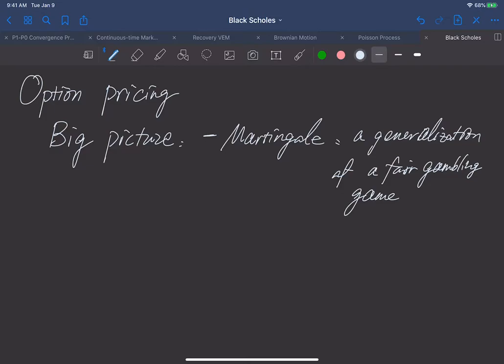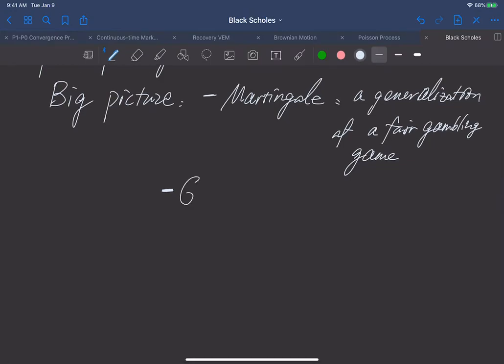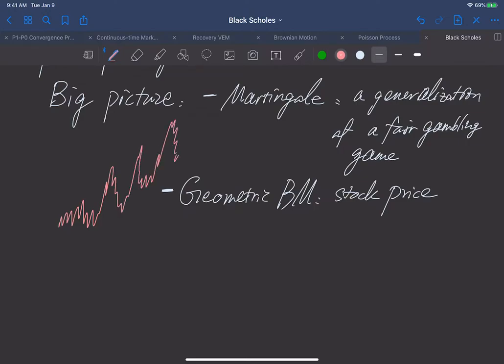The second component is geometric Brownian motion, which models the price of the stock. Option is giving you an option to buy a stock at a future time, so we need to model the volatile behavior, but in general our stock is moving up. The last is we'll learn the famous Black-Scholes model, which is the pricing of a simple European call option.